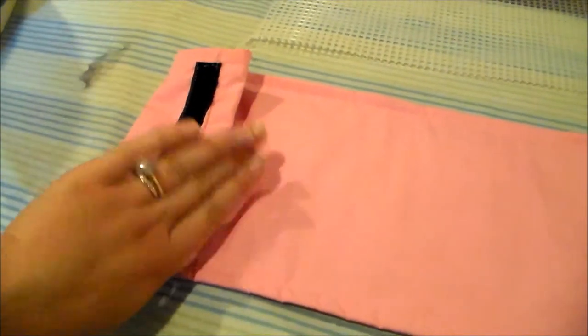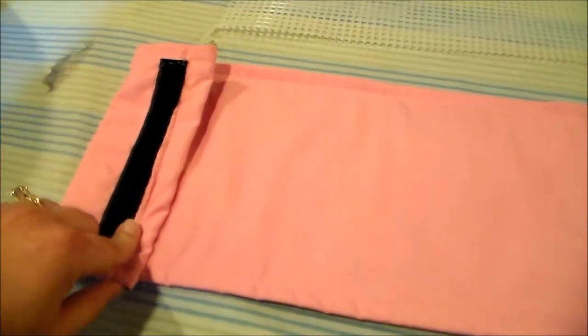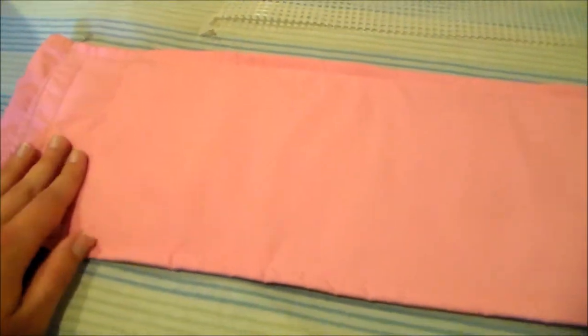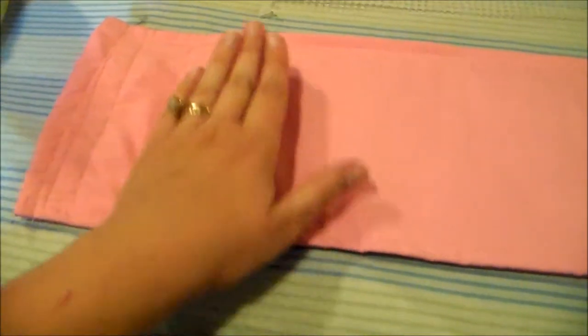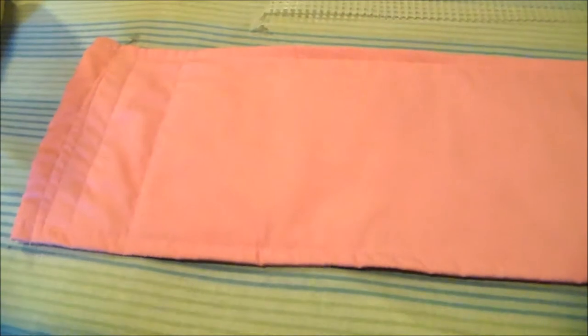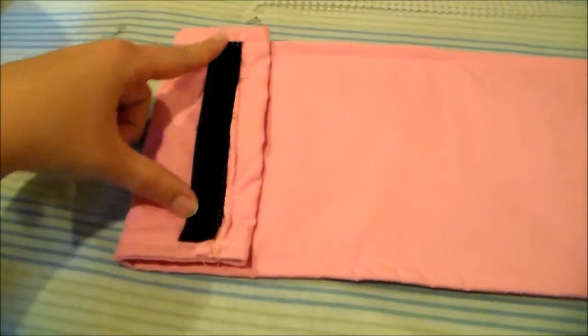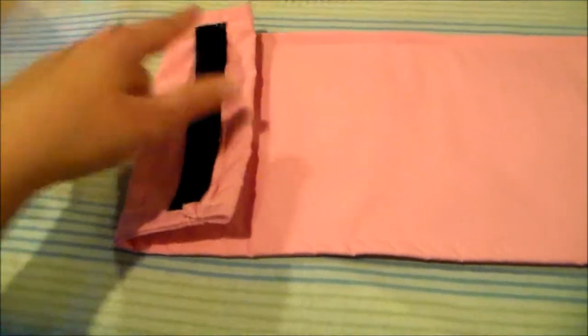You are going to fold your edges down, sew them down. I also added another length of stitching just to help keep the stiffeners in place, and then you're going to sew on some velcro.